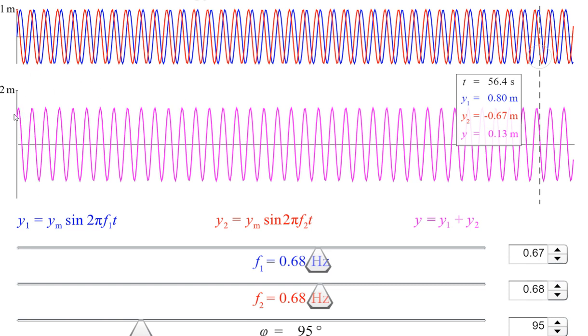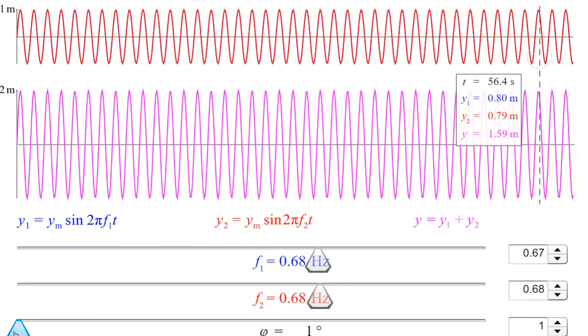So maximum amplitude here is two meters. Amplitude of each wave, the maximum displacement, is one meter for each. So this is their resultant. For example, let's suppose there is no phase difference between the two, then this type of result we obtain.